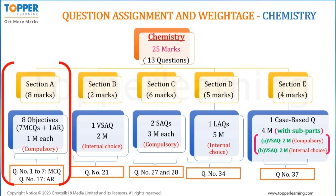In Section A, total 8 marks are allotted to chemistry with 8 objective questions of 1 mark each. These 8 chemistry objective questions comprise 7 MCQs and 1 assertion-reasoning question. All questions are compulsory. Question numbers 1 to 7 will be chemistry MCQs, and question number 17 will be the assertion-reasoning question from chemistry.